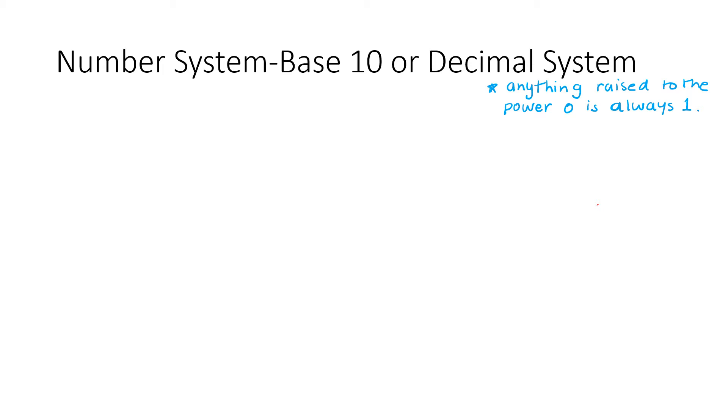Now you might be wondering, why is it called the base 10 system or the decimal system? And I'm going to break it down for you. Let's take a random number, say 346. And I'm going to break this number into three boxes, like this.